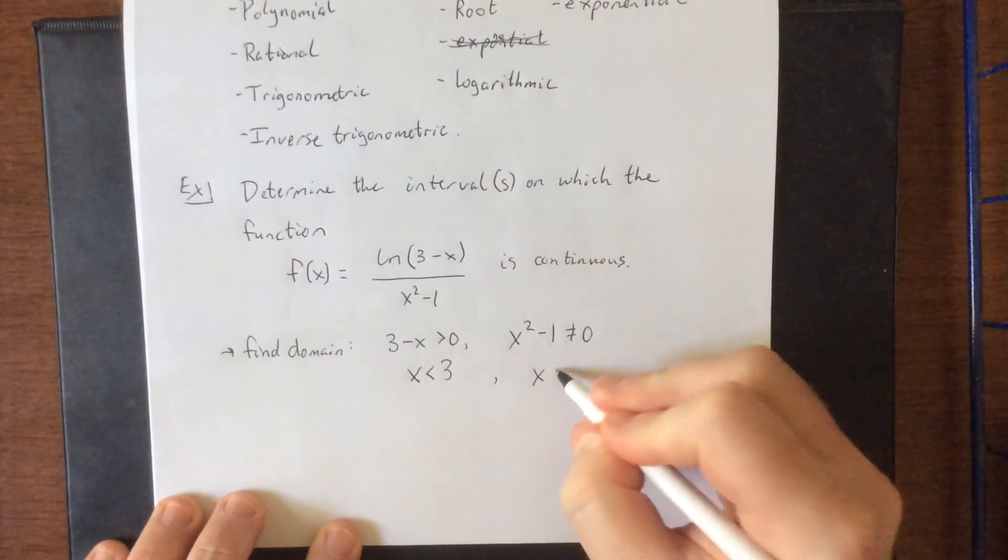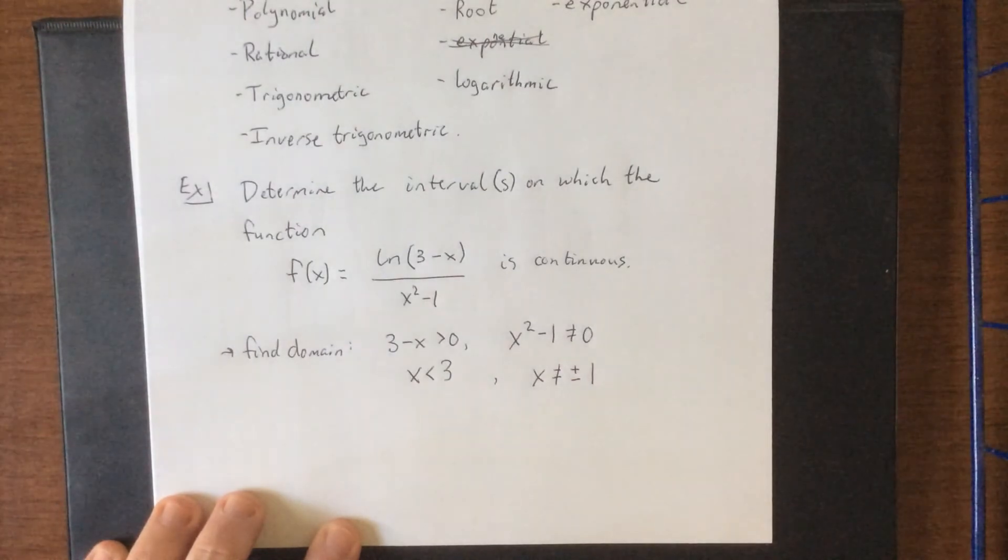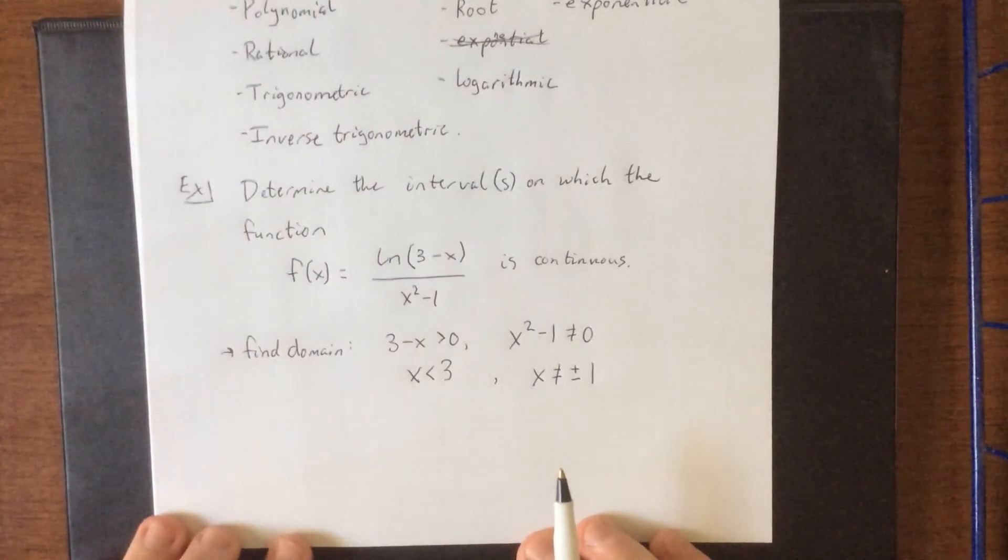And then over here, factoring a difference of perfect squares into binomial conjugates or simply adding 1 and taking a square root will let us know that x is not equal to positive or negative 1.